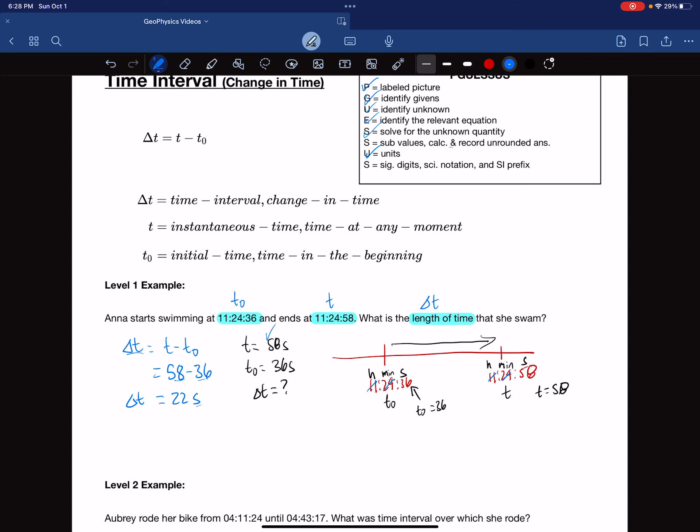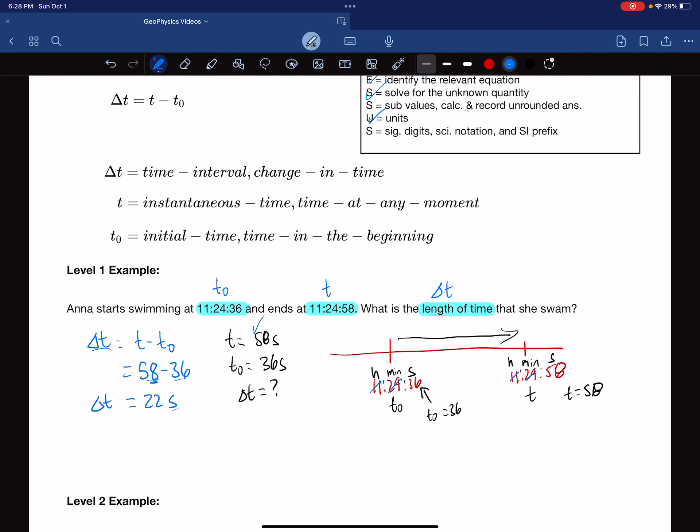And significant digits. Since both of these numbers were to the ones place, well, the final answer, the difference, would be to the ones place. And then lastly, scientific notation. Well, this, again, is a number that's larger than 10. So we can express this as scientific notation, and that becomes 2.2 times 10 to the 1 seconds. So this is our final answer.